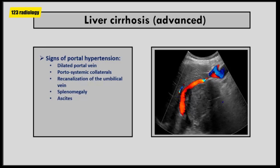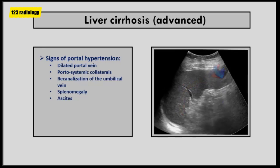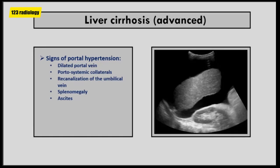Recanalization of the umbilical vein is a sign of severe portal hypertension, found in 10 to 20% of cases of advanced liver cirrhosis. The recanalized umbilical vein can be traced from the left branch of the portal vein continuing to the abdominal wall downwards towards the umbilicus. Splenomegaly is frequently seen in approximately 80% of cases of liver cirrhosis, frequently exceeding 15 cm in bipolar diameter. Ascites is frequently encountered in patients with decompensated liver cirrhosis, and ultrasound is a very sensitive method to detect it.